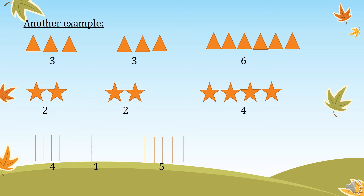Here we have two groups of vertical lines. The first group contains four vertical lines and the second group contains one vertical line. The sum of these two groups is a group of five vertical lines.